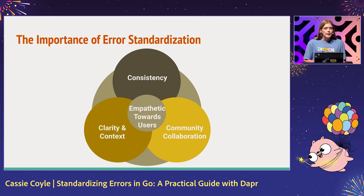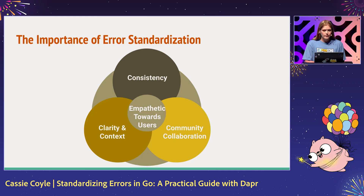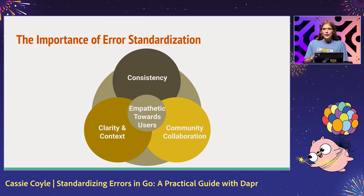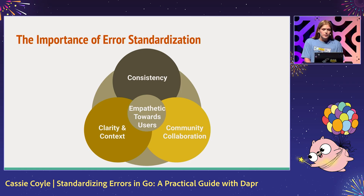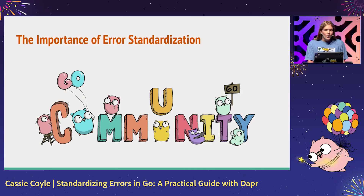Which brings us to the importance of standardizing your errors. It's important to give back to your user a consistent and reliable error to enable them a smoother debugging process — one that gives them context and clarity about the error, like what app ID, what resource type, maybe the environment, et cetera. In the same way that our users can expect that standardized error, our developers are actually enabled to collaborate, because it's writing that standardized format for the error. All of this leans towards being empathetic to our users, which are application developers and our community.